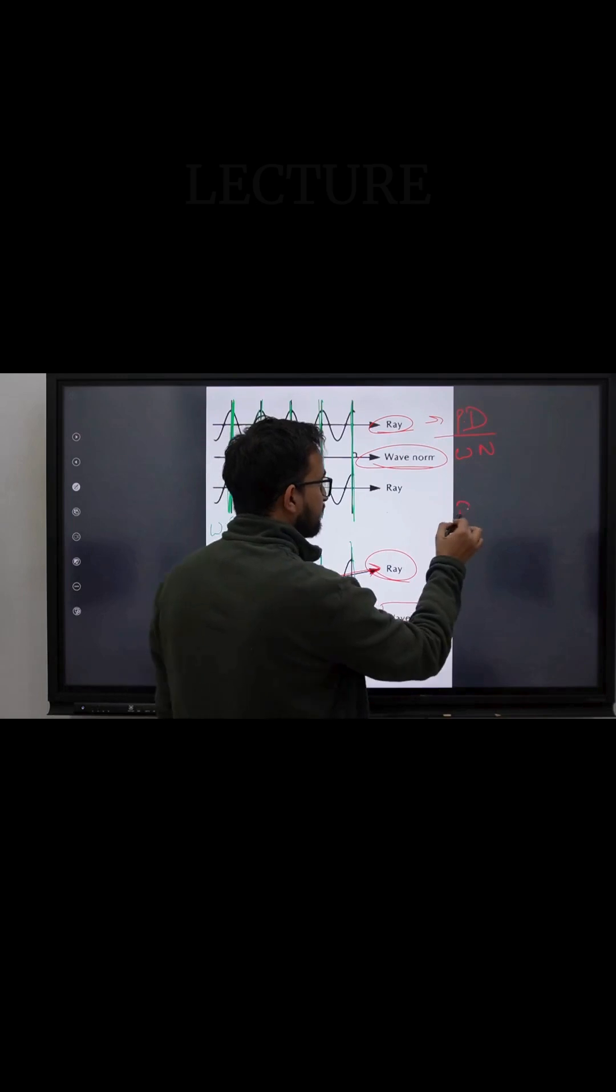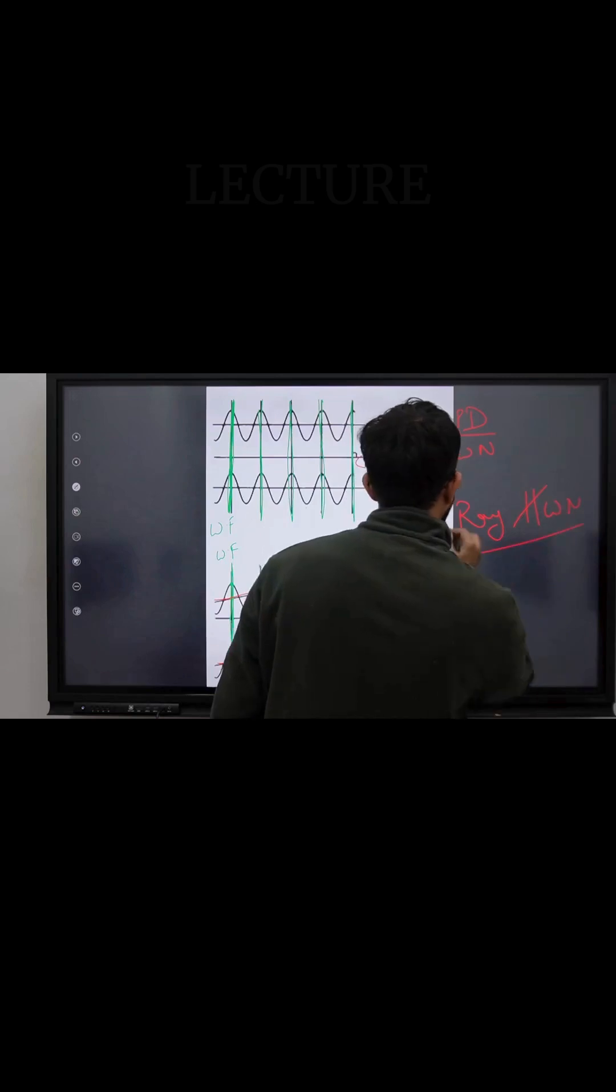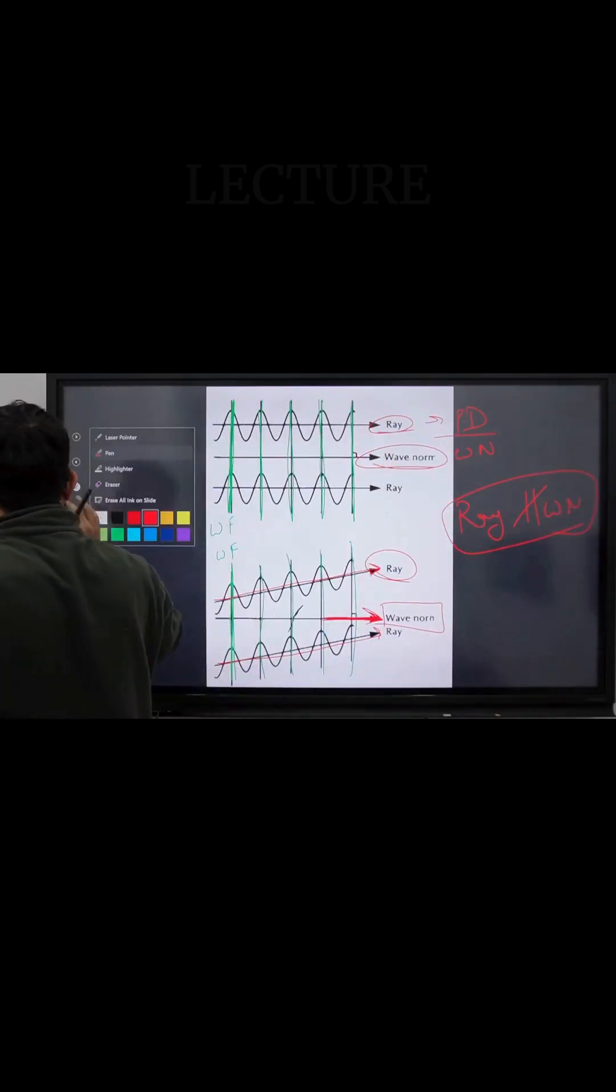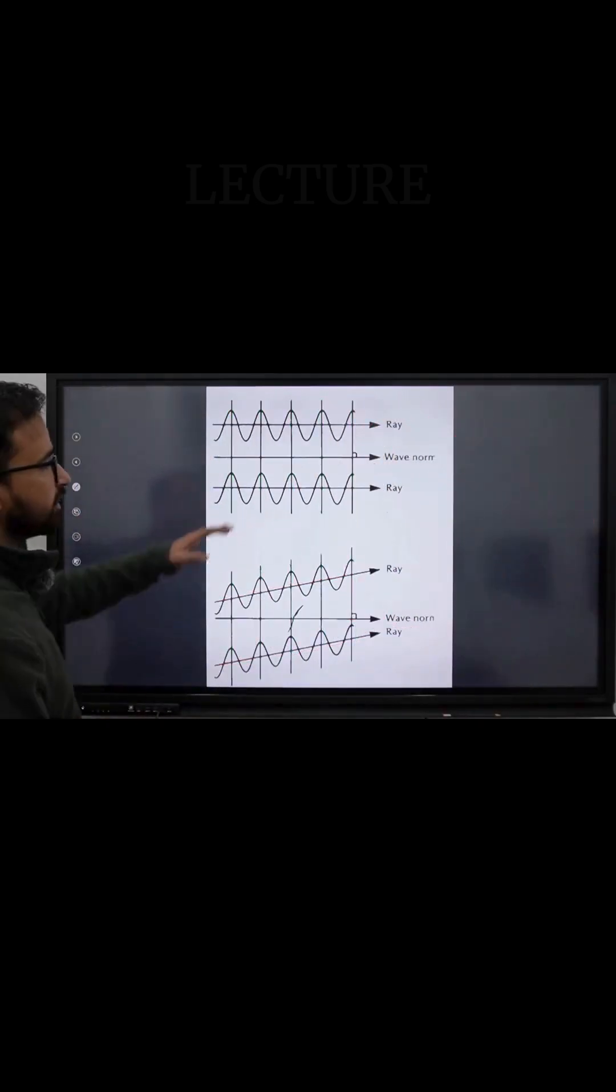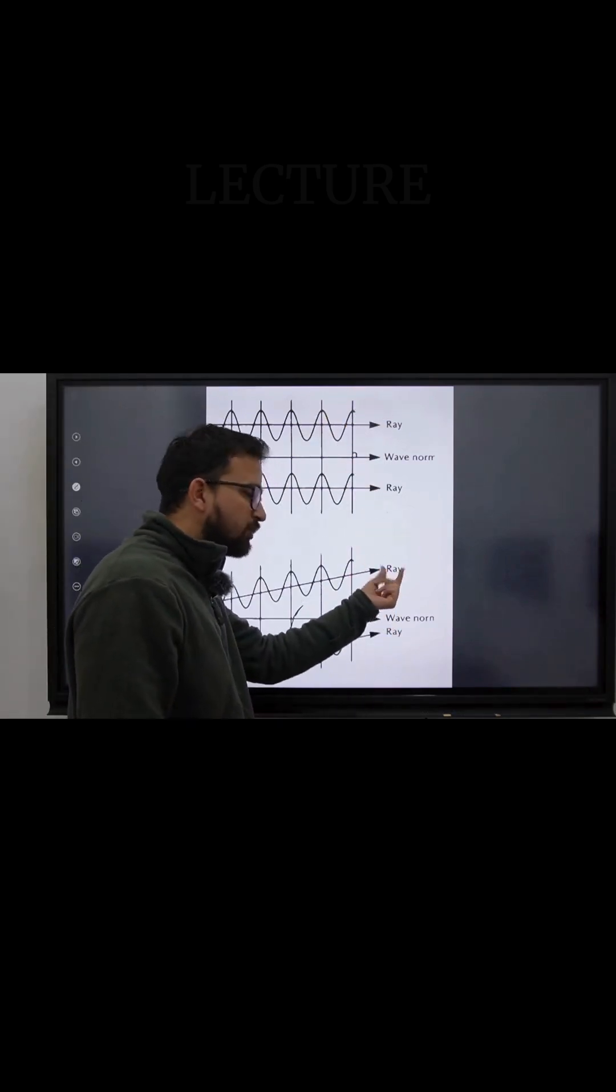My ray direction is not parallel to my wave normal. So these are the two scenarios that we have to keep in mind. The first is in which the wave normal is parallel to the ray, and the second one, the wave normal is not parallel to the ray.